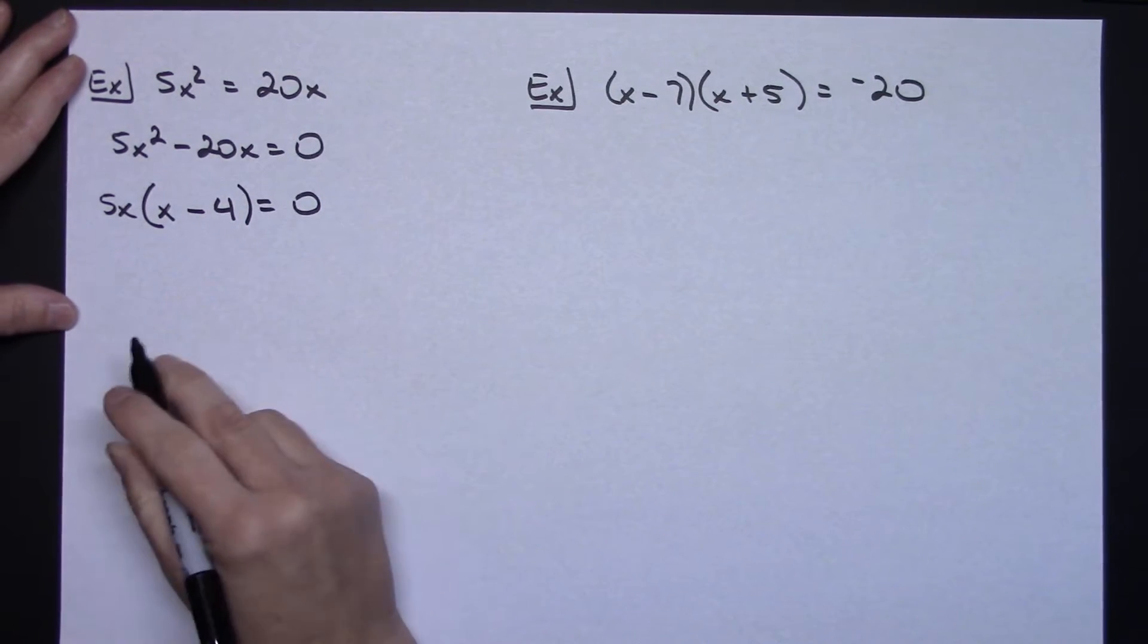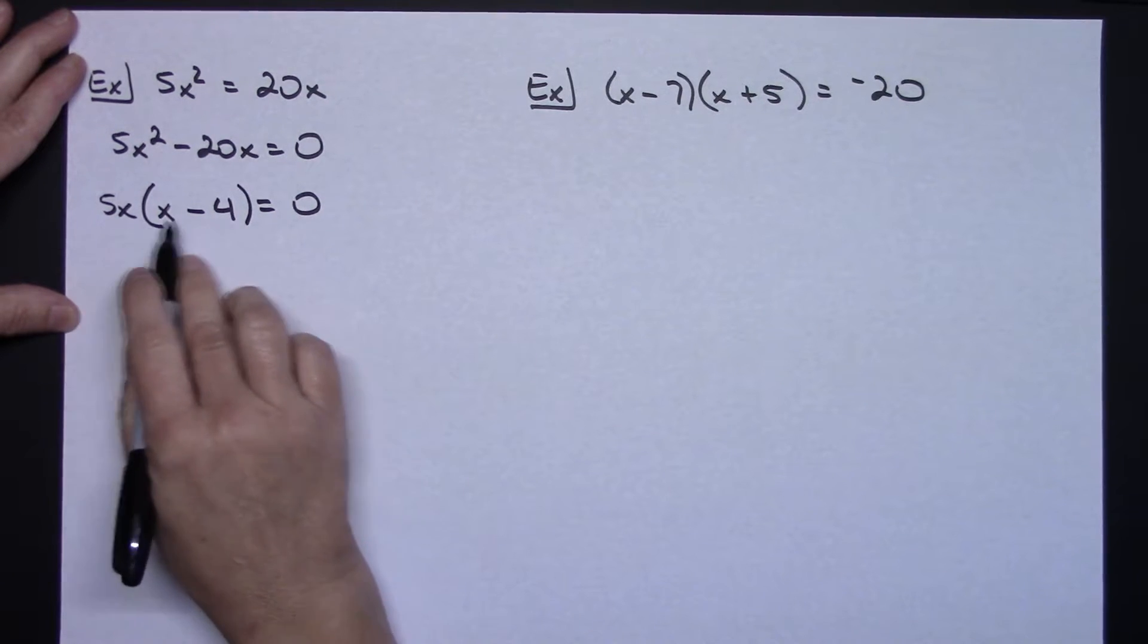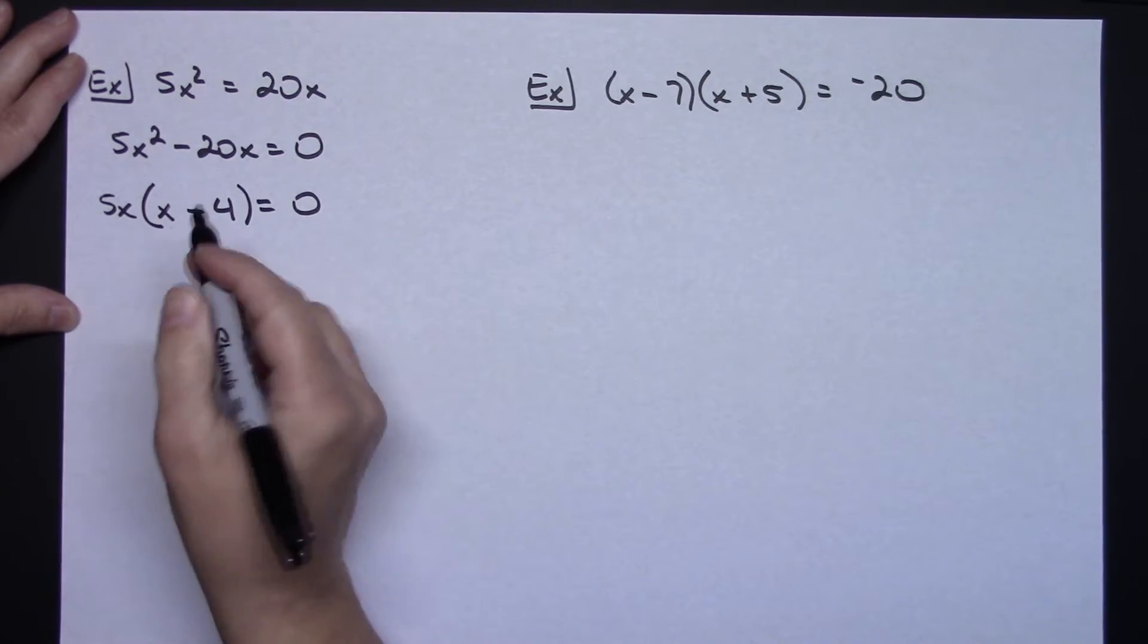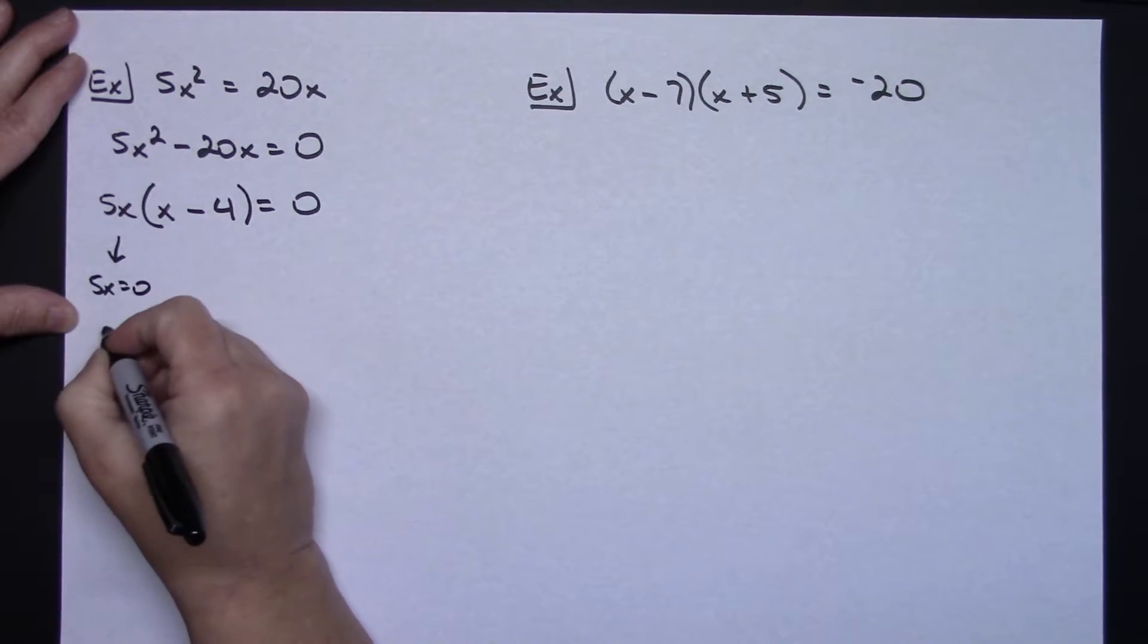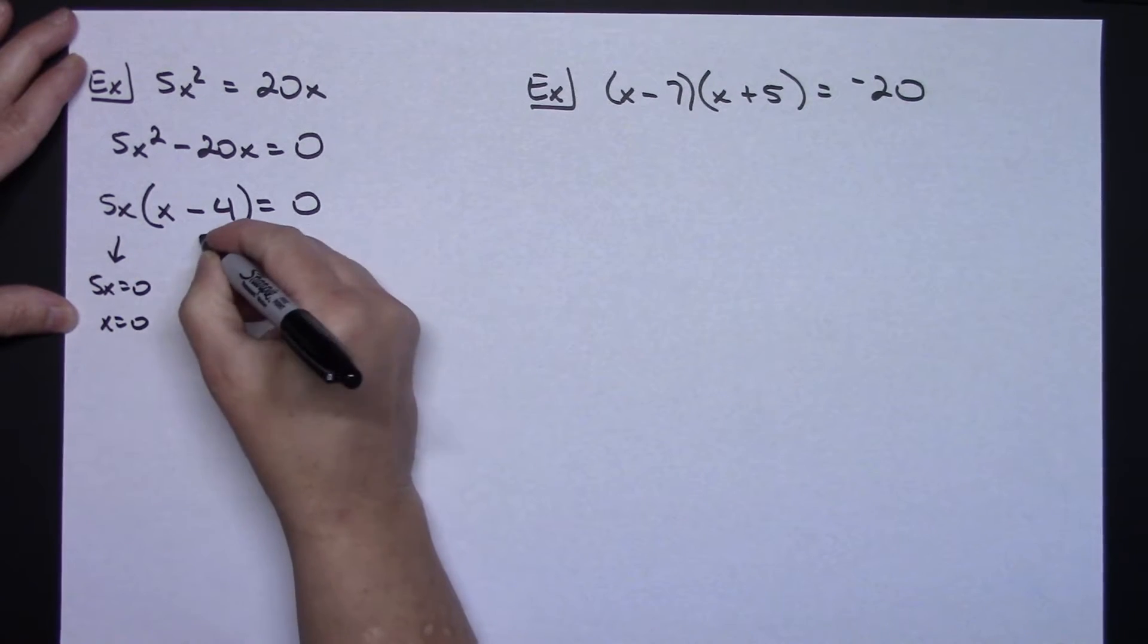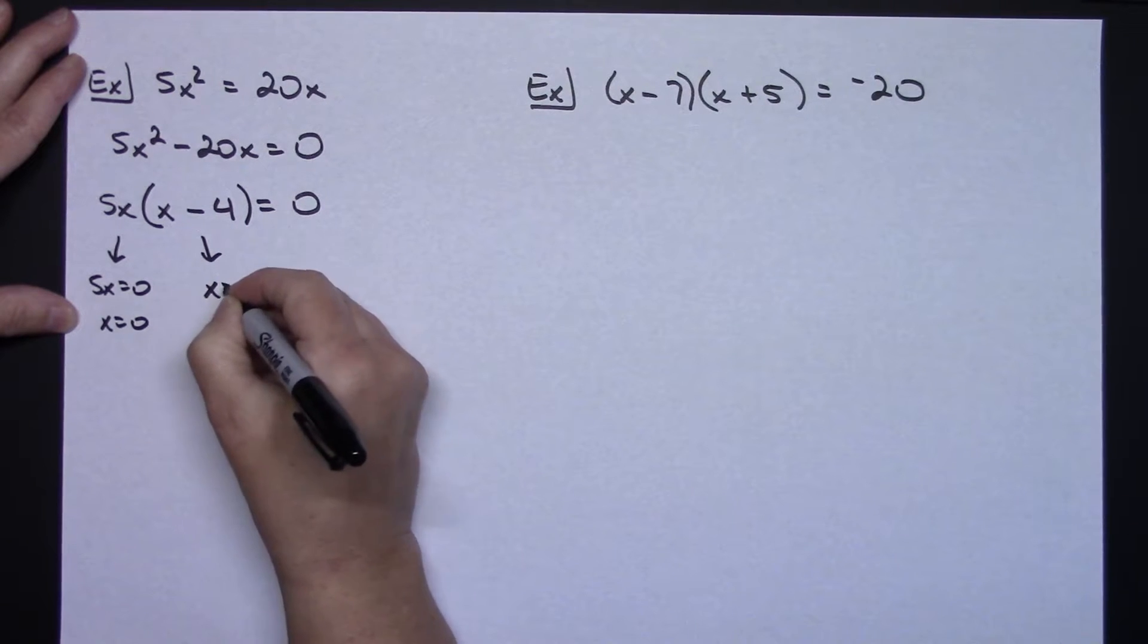Now at this point you're setting both things equal to 0. I have a product here that is set equal to 0, so I can set each one of them equal to 0. So 5x equal to 0, so that means x has to equal 0. And on this one then, x has to equal 4.